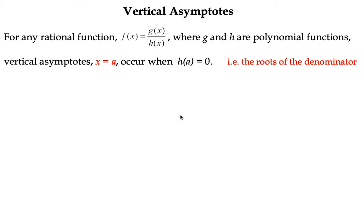We're doing example 10 in our functions and graph topic. I had a video on an introduction to asymptotes, so if you haven't watched that, I would suggest you go back and do that first. I'll try and summarise it very quickly. We're going to look first at vertical asymptotes, and then we're going to look at non-vertical asymptotes.